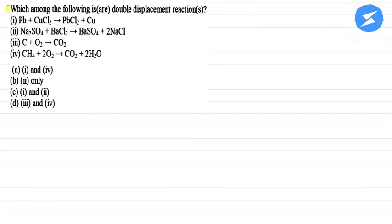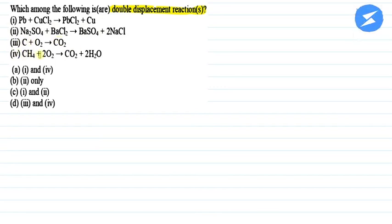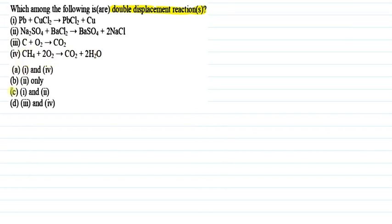Hello everyone, I will be your tutor for this question. The question is: which among the following is or are double displacement reactions? We need to identify the double displacement reactions out of the given reactions. Number one is Pb + CuCl₂ giving PbCl₂ + Cu. Number two is Na₂SO₄ + BaCl₂ giving BaSO₄ + 2NaCl. Number three is C + O₂ giving CO₂. Number four is CH₄ + 2O₂ giving CO₂ + 2H₂O. The options are: A) one and four, B) two only, C) one and two, or D) three and four.